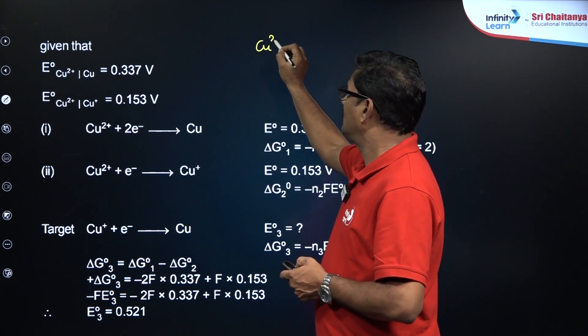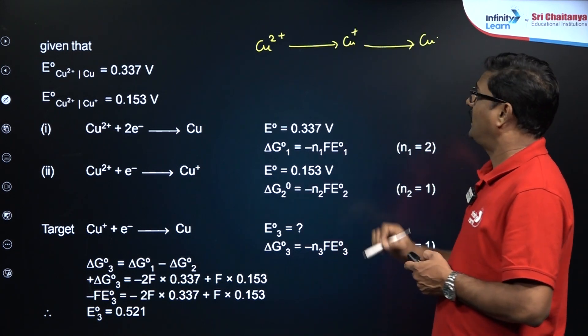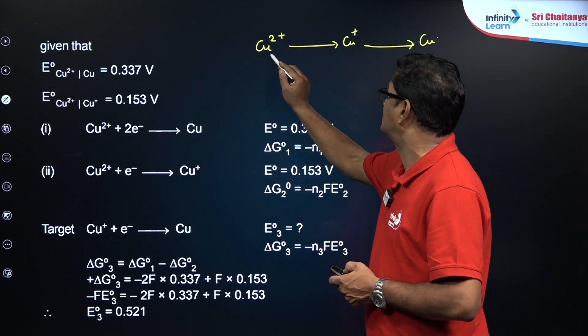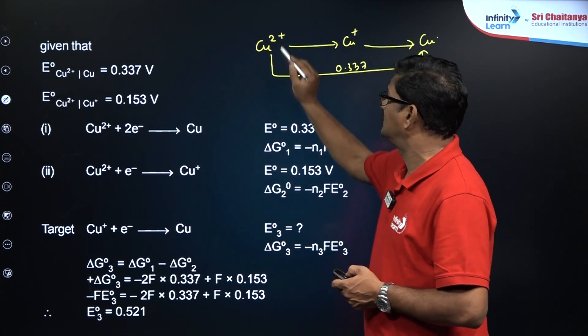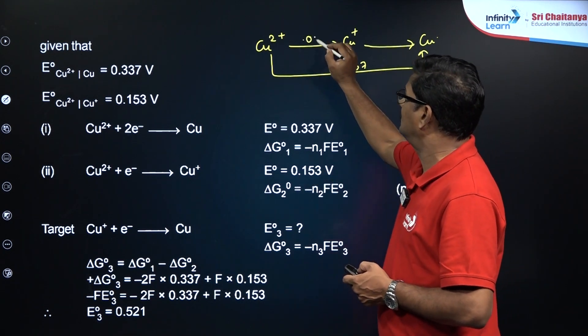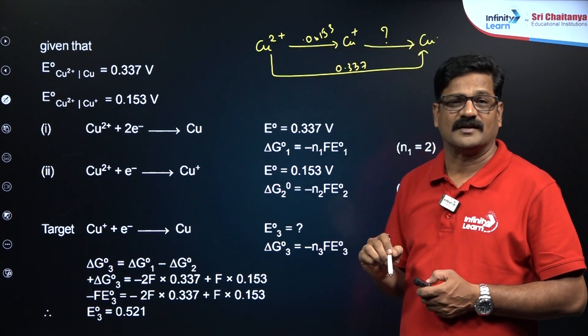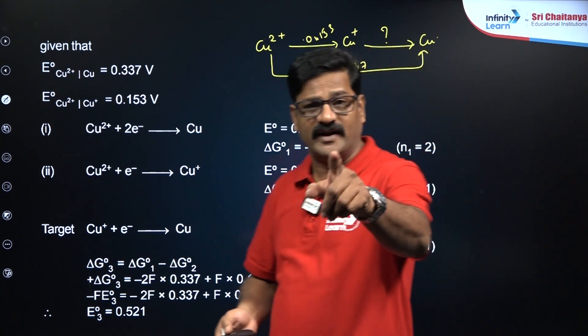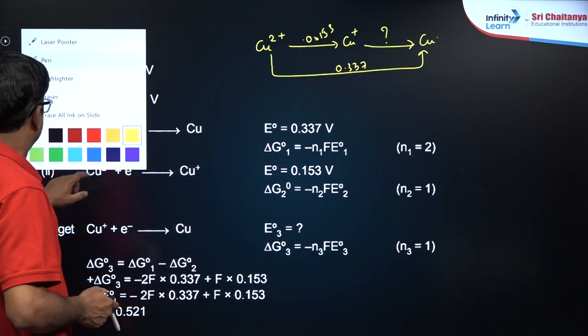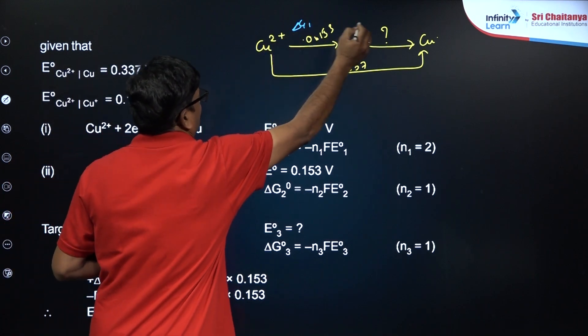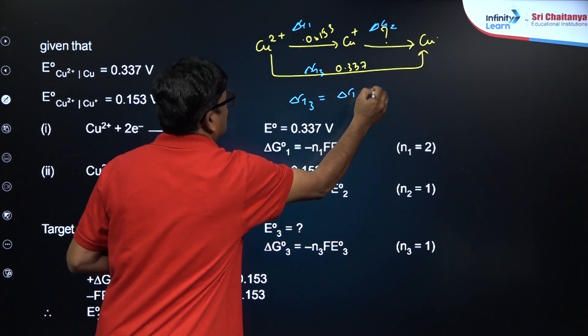I mean to say Cu2+ plus 2e- gives Cu, and Cu2+ plus e- gives Cu+. This is given, 0.337 is given, and Cu2+ plus electron is given that is 0.153 is given, and Cu+ to Cu you are asked how to calculate. Electrode potential values are not additive values, but Gibbs free energy change values are going to be additive values. Let us see this value here delta G1 and delta G2, and it is going to be delta G3.